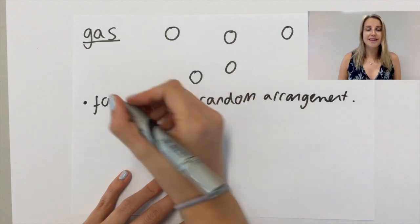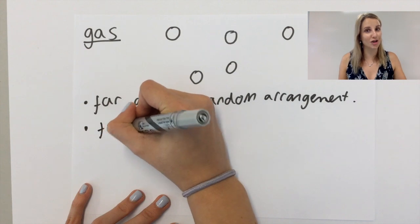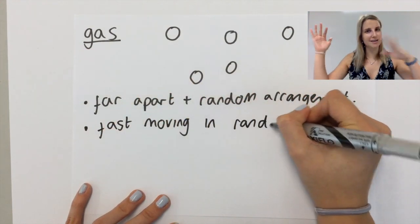In terms of their movement, gases have a lot more energy so they move a lot faster than the particles in a solid or a liquid, and they're also moving in completely random directions.